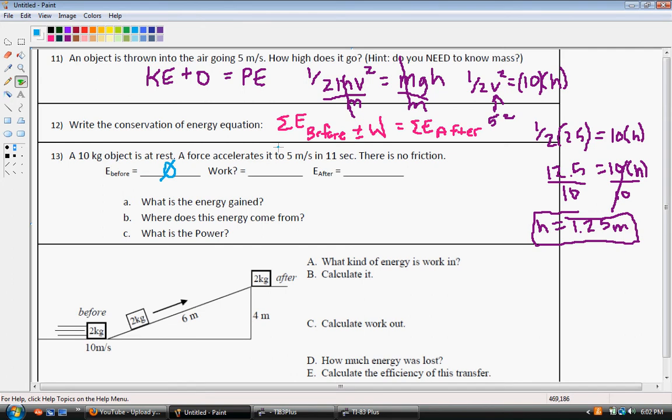And then it accelerates to go 5 meters per second in 11 seconds, so there's no friction, so at the end it's going 5 meters per second. Is it moving? Yes. Is it above the ground? No. Is it on spring? No. So we know that we have kinetic energy here. So what had to happen between here and here for us to get energy? Well, we added energy to the system, so we're doing positive work.